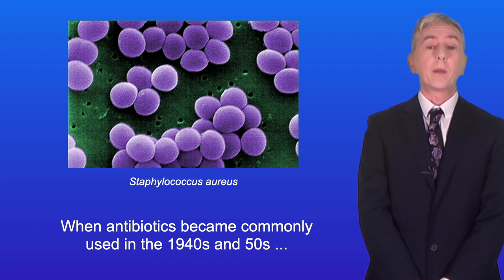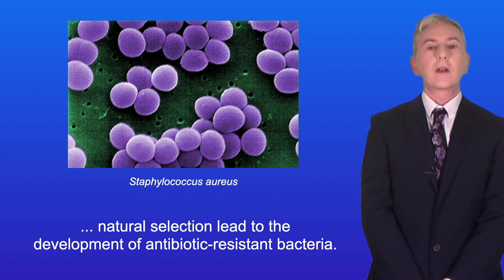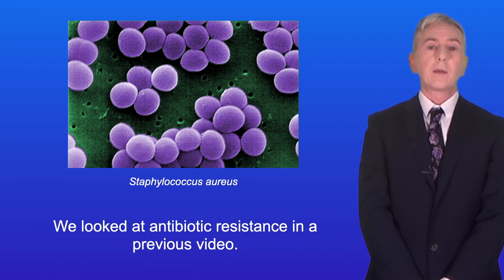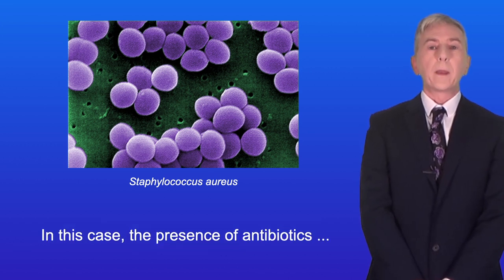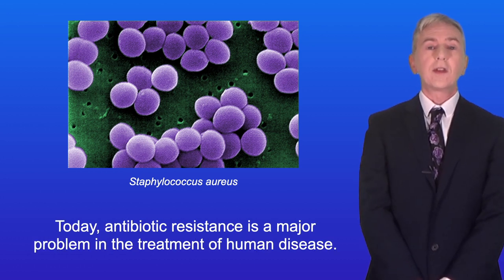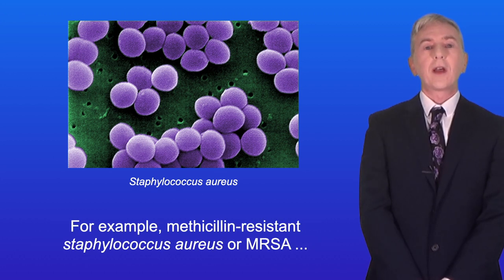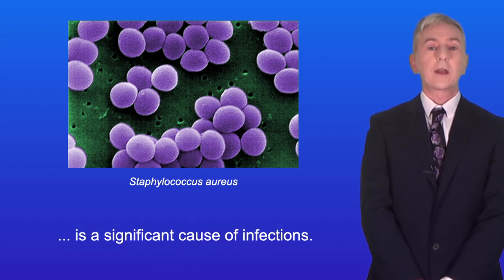When antibiotics became commonly used in the 1940s and 50s, natural selection led to the development of antibiotic resistant bacteria. The presence of antibiotics was a selection pressure driving natural selection. Today, antibiotic resistance is a major problem in the treatment of human disease. For example, methicillin resistant Staphylococcus aureus, or MRSA, is a significant cause of infections.